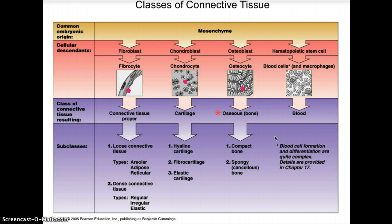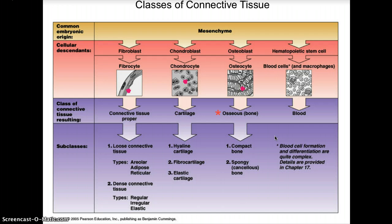Our next connective tissue type is osseous tissue, or bone. Mesenchyme forms osteoblasts, which develop into osteocytes. There are two types: compact bone and spongy cancellous bone. Bone is the most rigid connective tissue. Osteoblasts and osteocytes form an extremely hard matrix of mineral salts, notably calcium salts, deposited around collagen fibers. The minerals give bones their rigidity, while collagen fibers provide elasticity and strength, much like steel rods reinforcing a concrete structure.